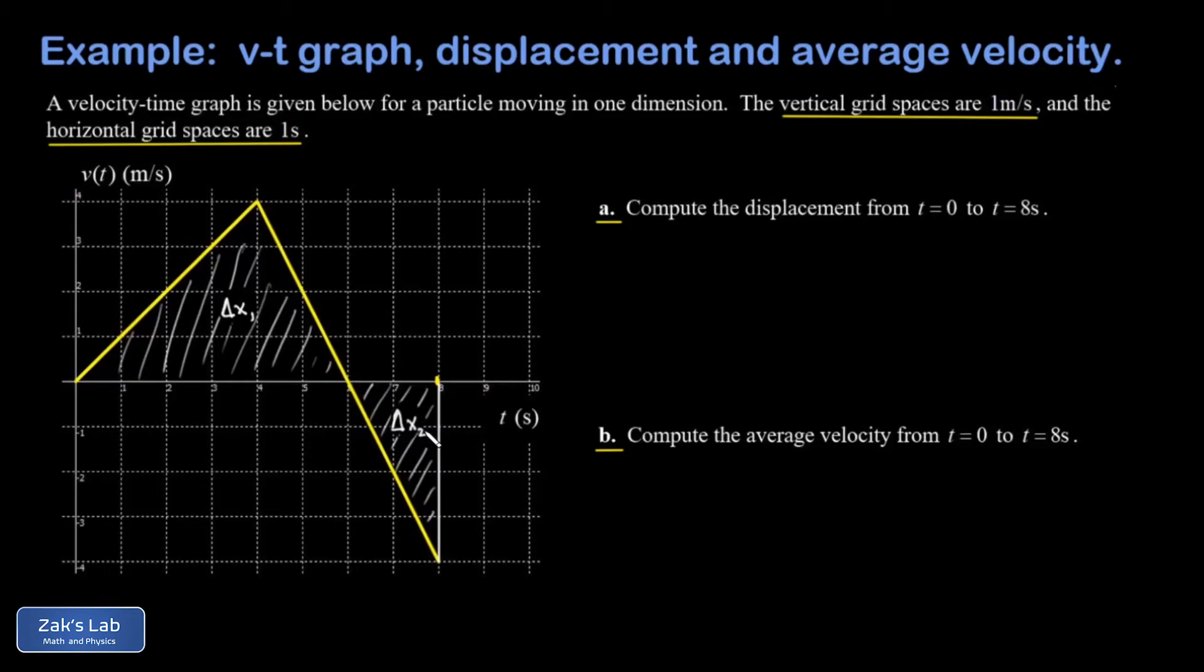Because these are triangles, the area is simple to find. I just use the triangle area formula, one half base times height. The base for the first triangle is six seconds and the height is four meters per second. I kept the units just to illustrate that I do get units of meters. Six times four is 24, divide that by two and I get 12 meters, which counts as positive for delta x1.